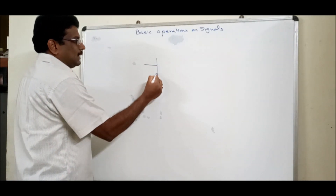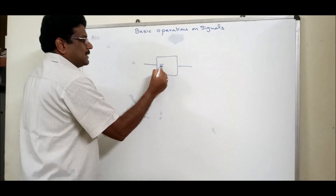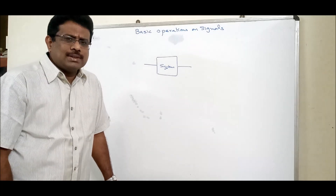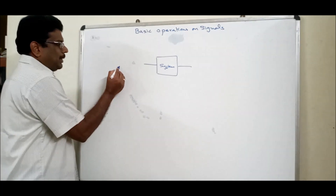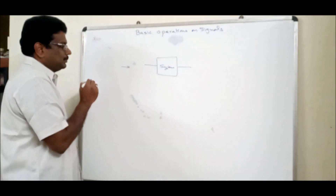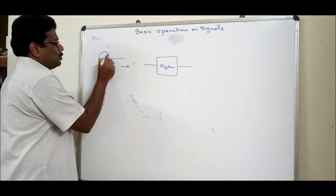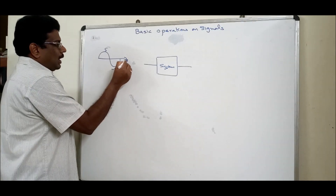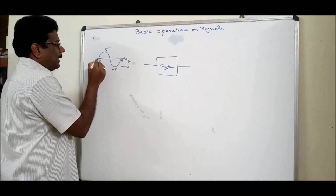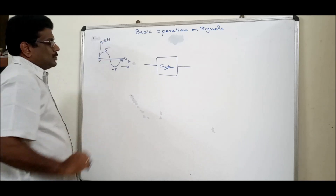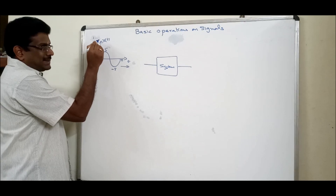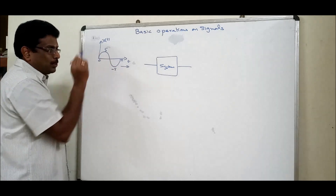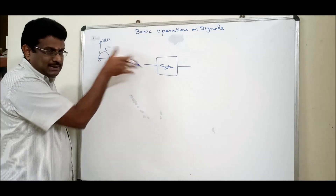Let us consider there is a system. As I mentioned in the introduction class, a system is a circuit. Let me use some input to this system, which is a sinusoidal signal whose amplitude is 5 and whose duration is 0 to 5. If we feed such a signal to this system...